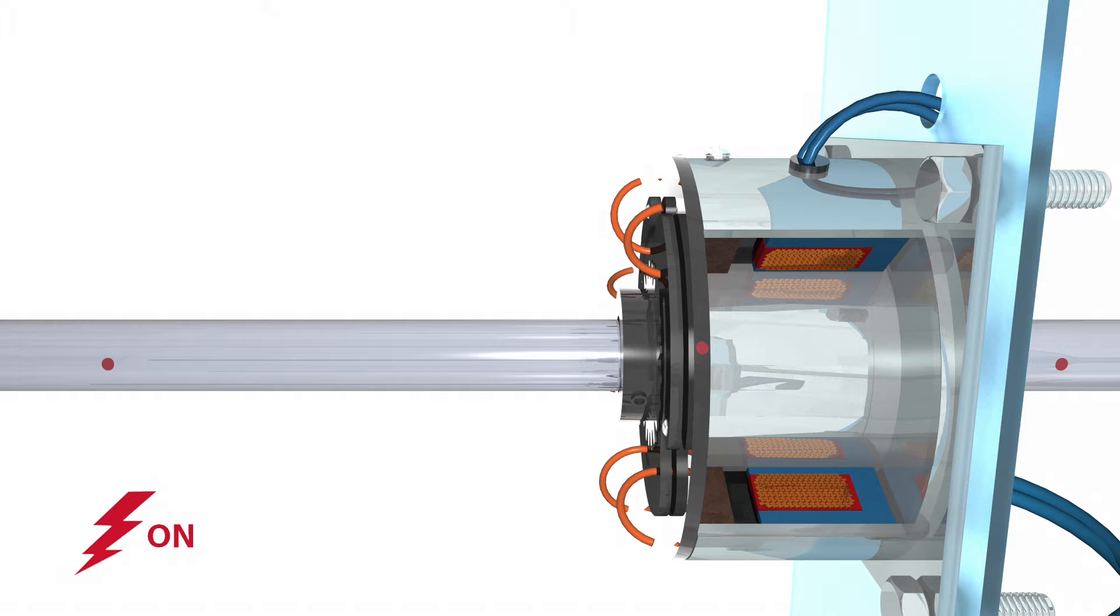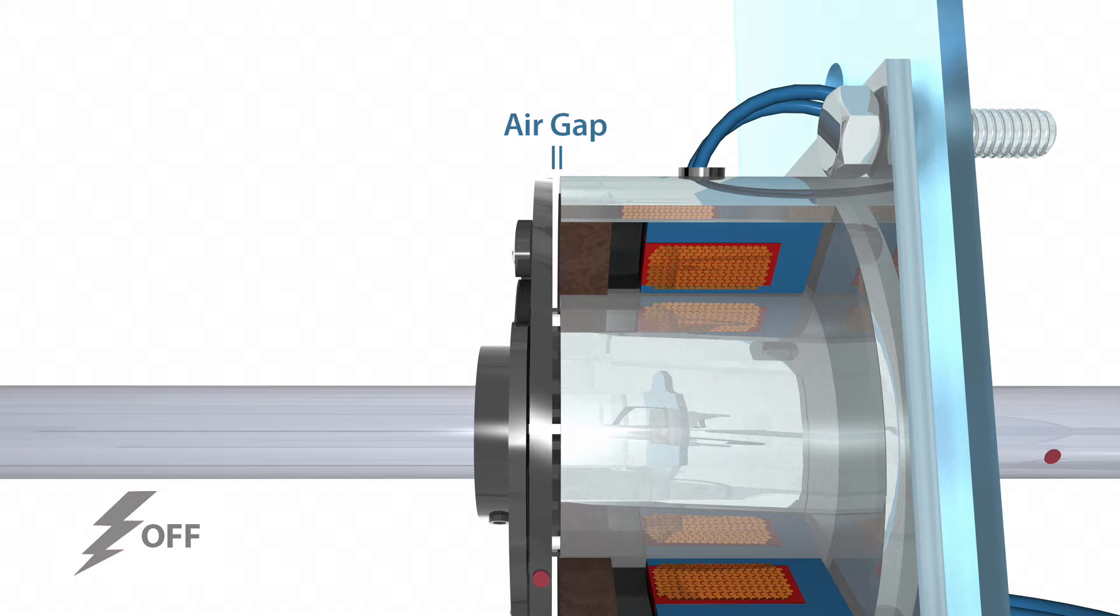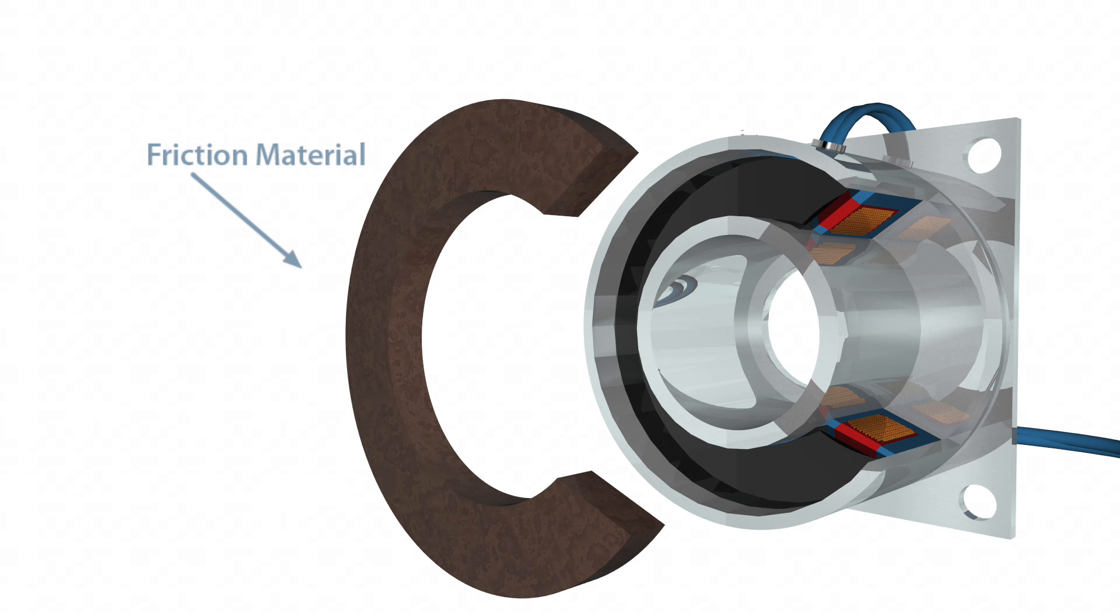When current or voltage is removed from the brake, springs hold the armature away from the hub surface creating a small air gap.